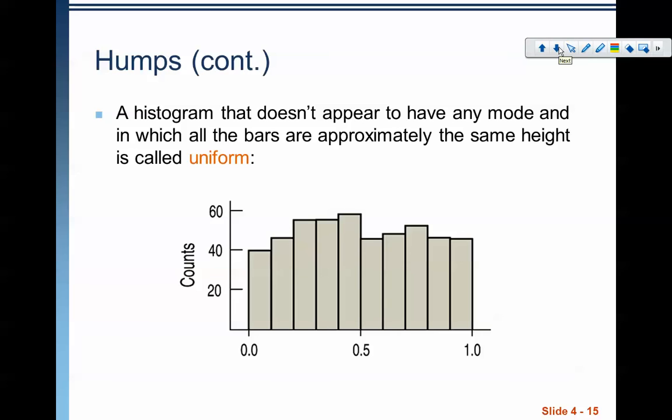The last one that you might see a histogram called is a uniform histogram, and that's basically where all the bars are approximately the same height. You can see here, again, there isn't like a central bump. Most of it is about the same. Yes, there's some things that are a little bit different, but again, it's mostly the same. And there's some wiggle room in this. This isn't perfectly uniform, but it's basically uniform, and so we would call it uniform. So, there's some wiggle room in these descriptions.